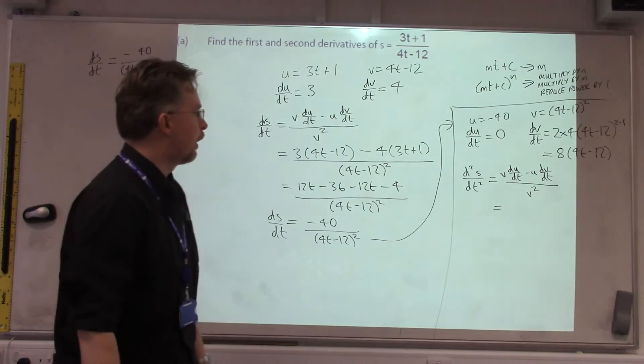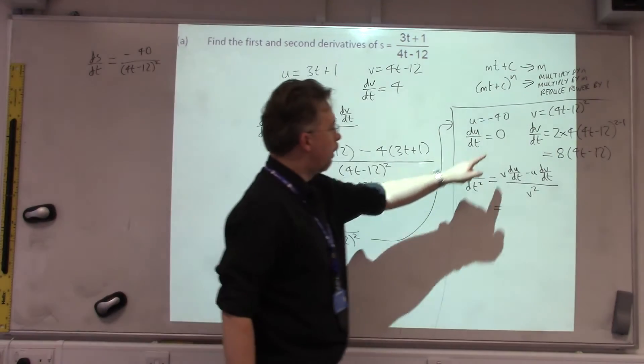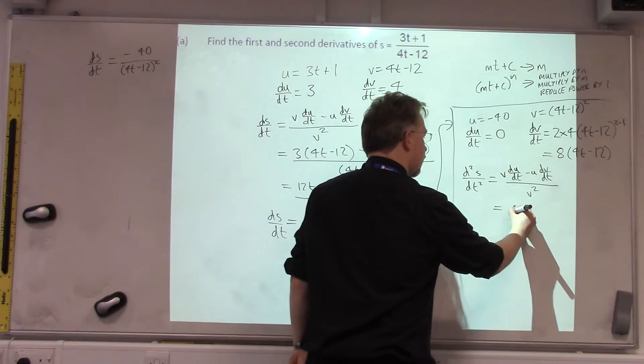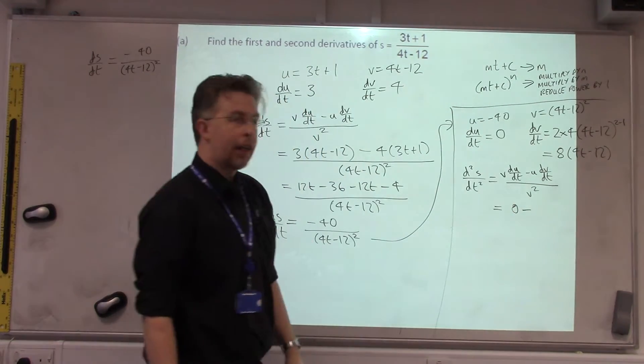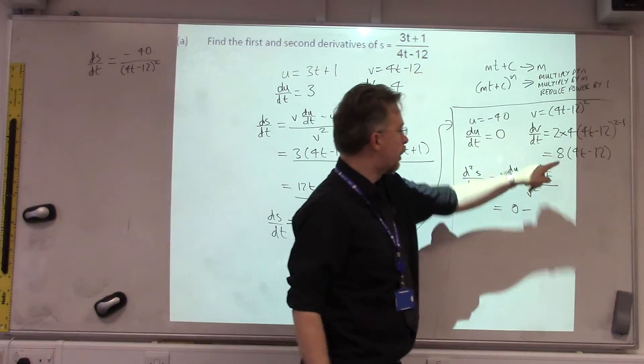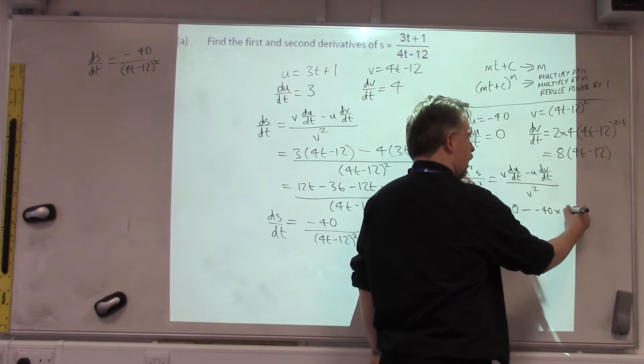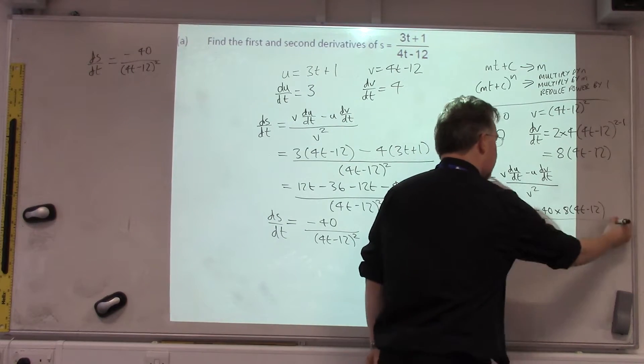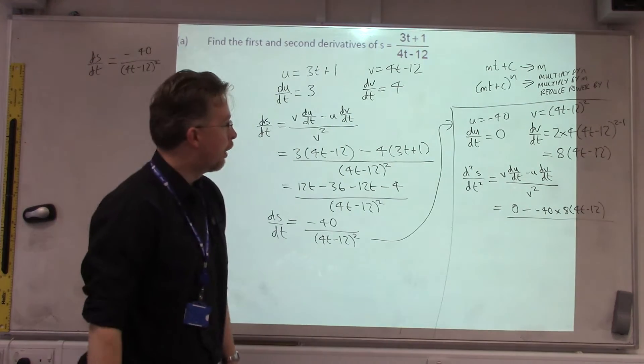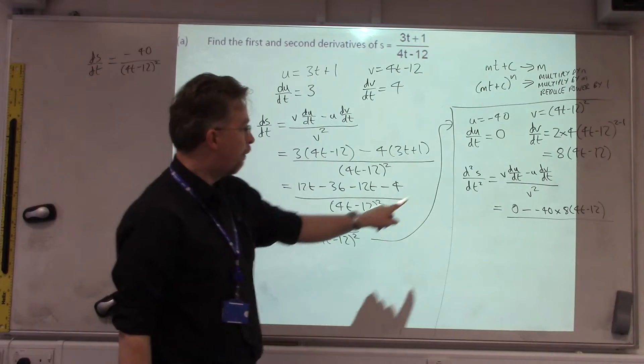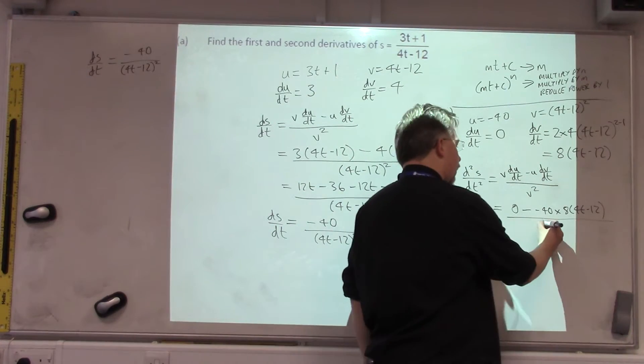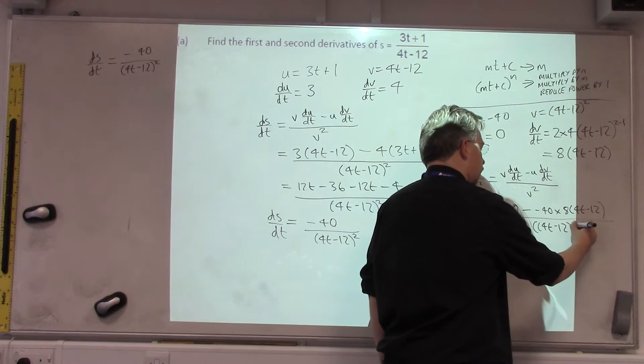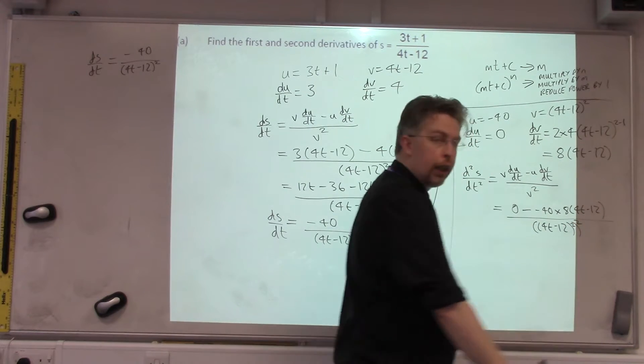So, V times DU by the T, well, DU by T is zero, so we just get zero for that bit. Minus U times V by the T, so minus 40 times 8 times 4T minus 12, all over the V squared. So, 4T minus 12 squared, squared again.